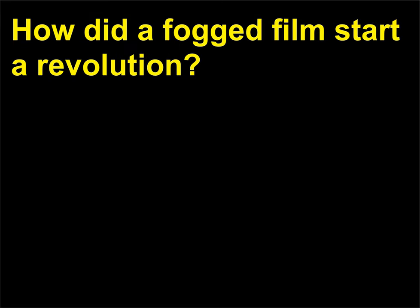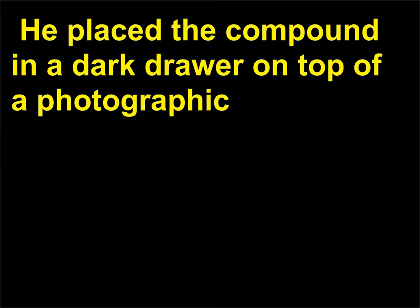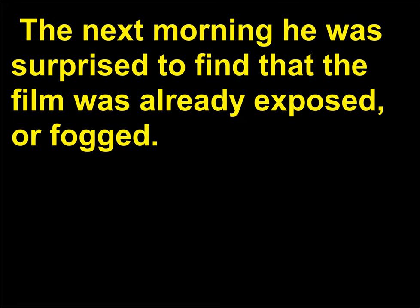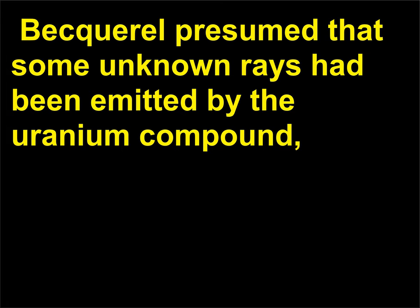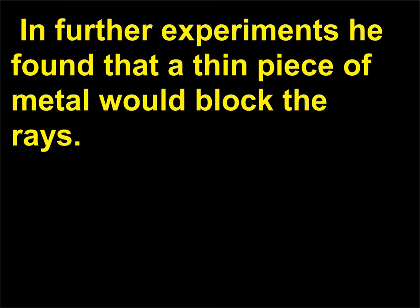How did a fogged film start a revolution? In 1896, the French physicist Henri Becquerel (1852–1908) was exploring the properties of a compound of uranium that glowed in the dark. He placed the compound in a dark drawer on top of a photographic plate wrapped with heavy black paper to make it light-tight. The next morning he was surprised to find that the film was already exposed, or fogged. Becquerel presumed that some unknown rays had been emitted by the uranium compound, gone through the paper, and created the same chemical reaction in the plate that light would. In further experiments he found that a thin piece of metal would block the rays.